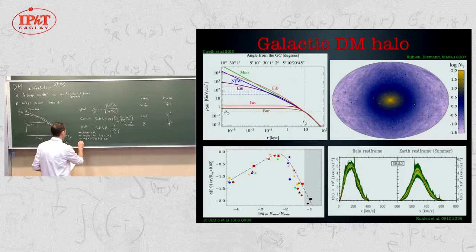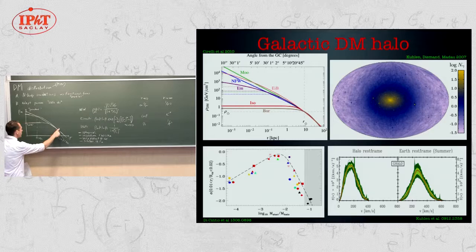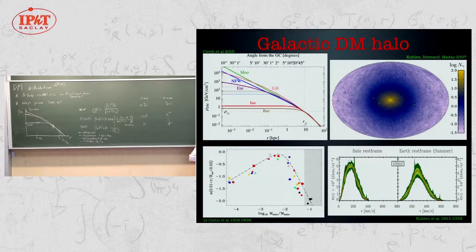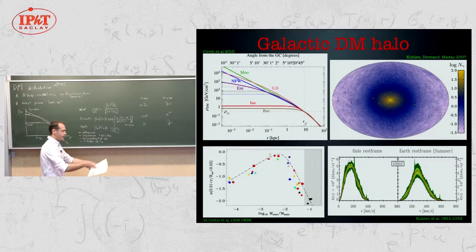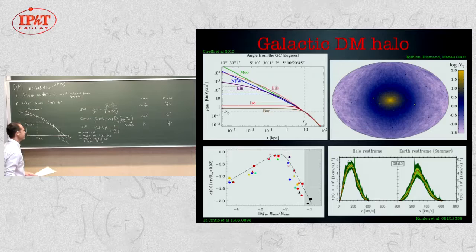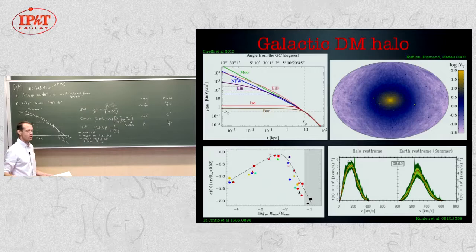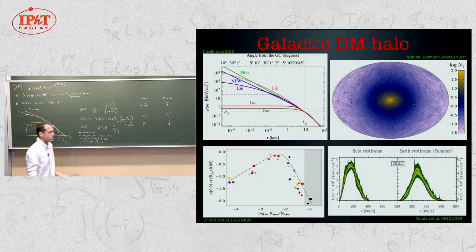On the other hand, these profiles are all rather similar at the location of the sun — say between a few kiloparsecs and about 20 kiloparsecs, they are all essentially the same. That means that if you are looking at a signal sensitive to the local dark matter distribution — such as high-energy electrons from dark matter annihilation around the Earth — choosing one profile or the other will not matter much, so there will be much less uncertainty.